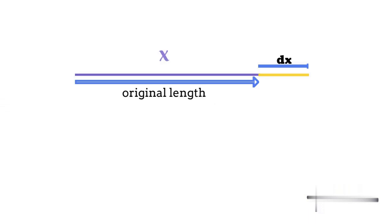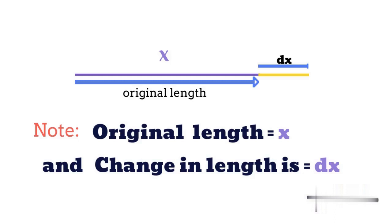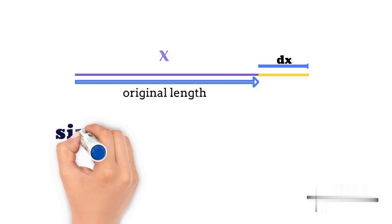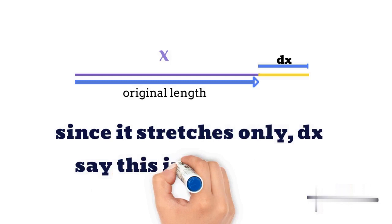You might have noticed that the original length of the one-dimensional line is x and dx is the small amount of change along the original length x. Since it only increased dx, let us give this new total increase as dy. You can also say that total increasing amount is dy and therefore dy is equals to dx.